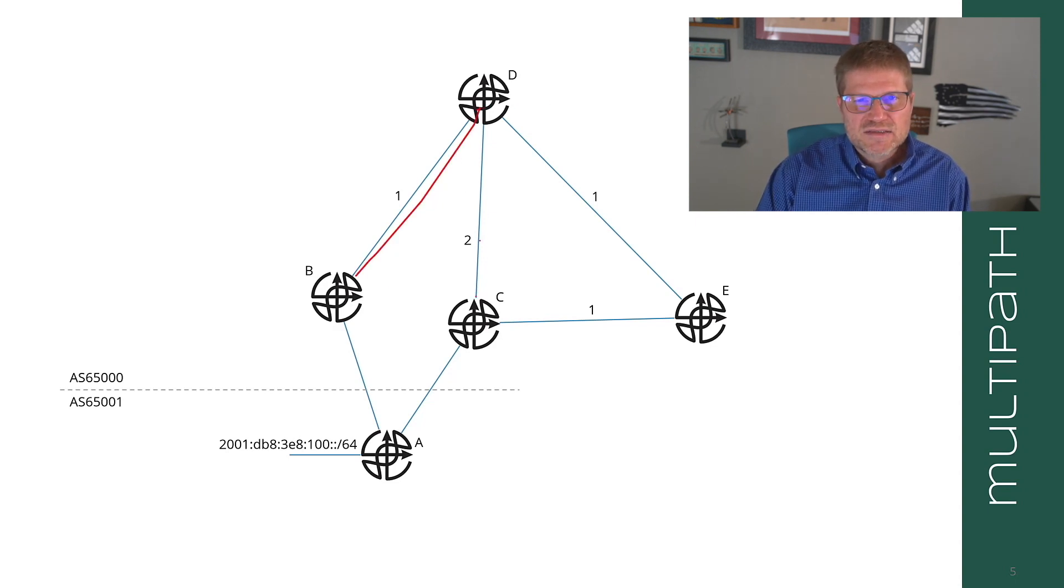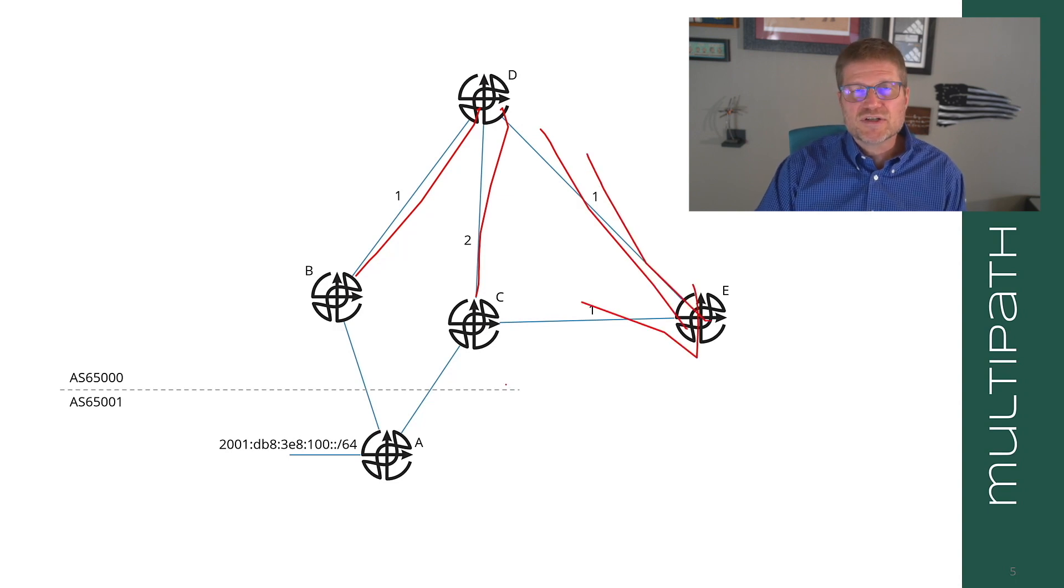The other option is D can say, well I have two paths. I'm just going to send them both to E and let E make its own decision locally. So this is called multipath.